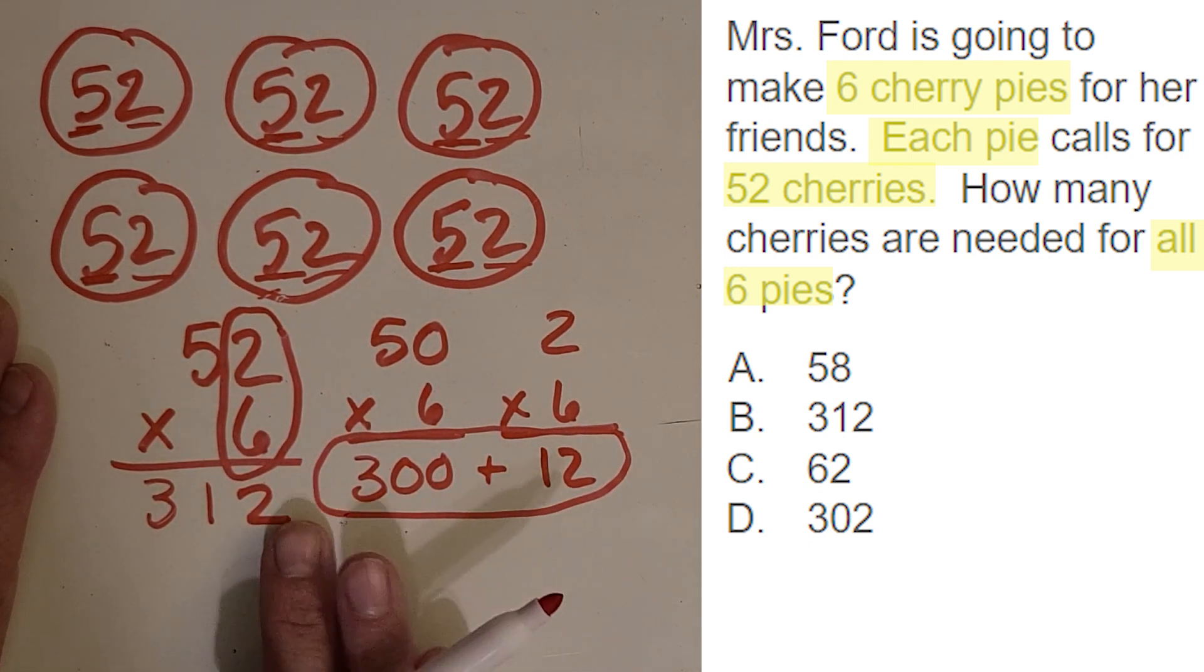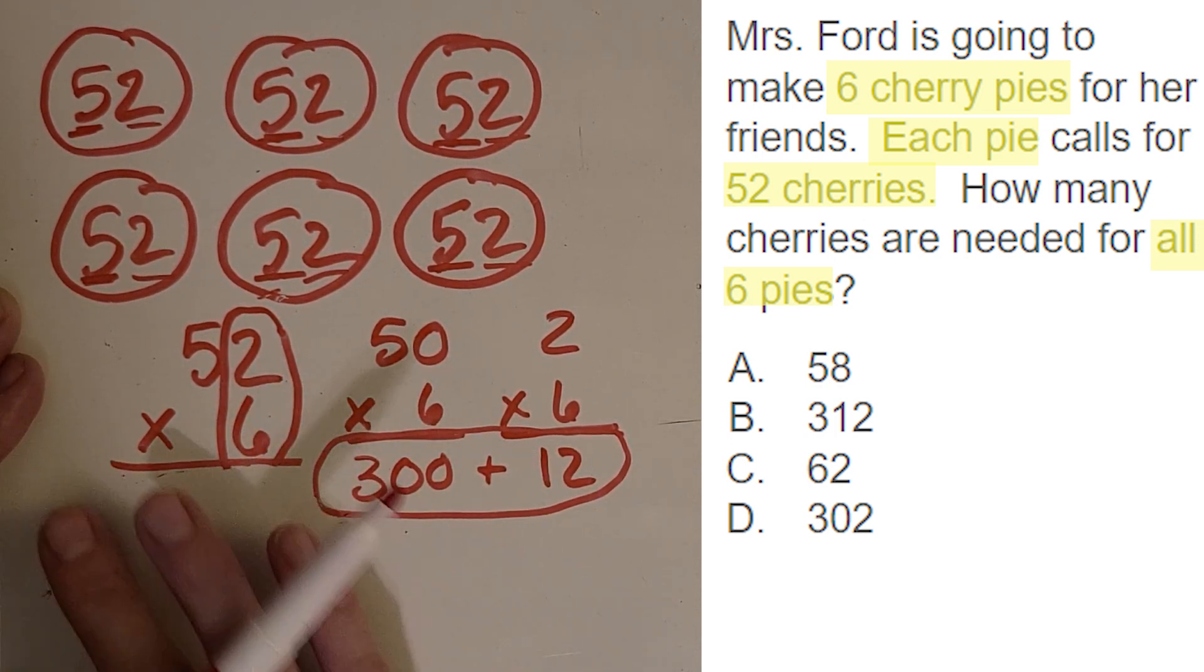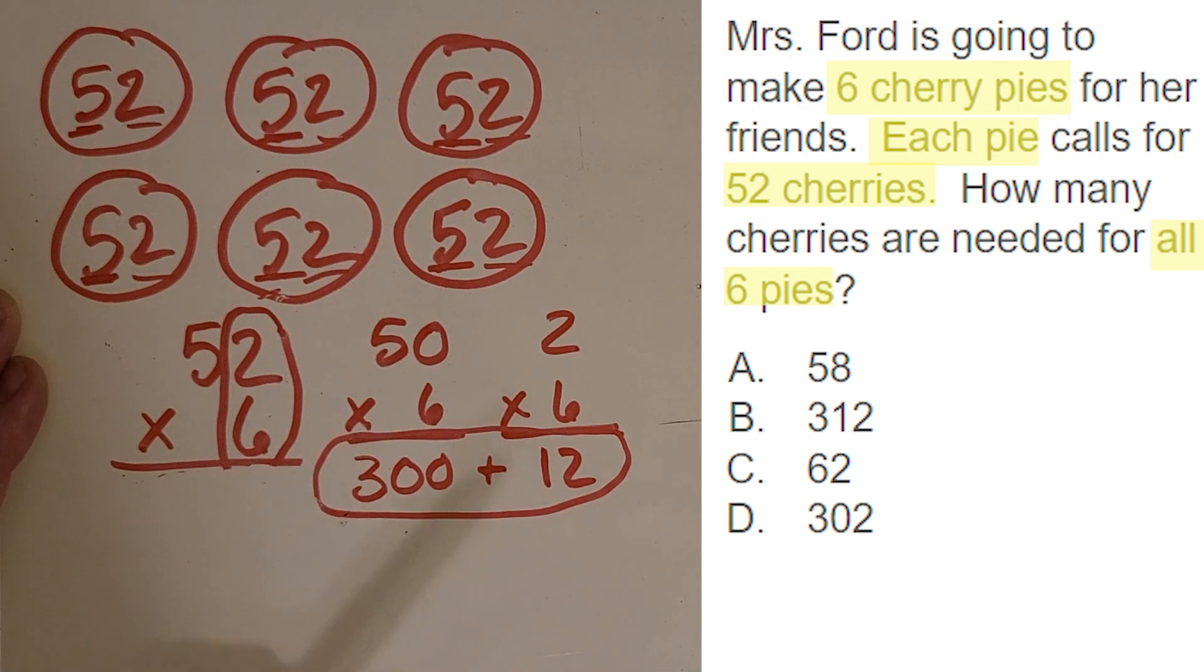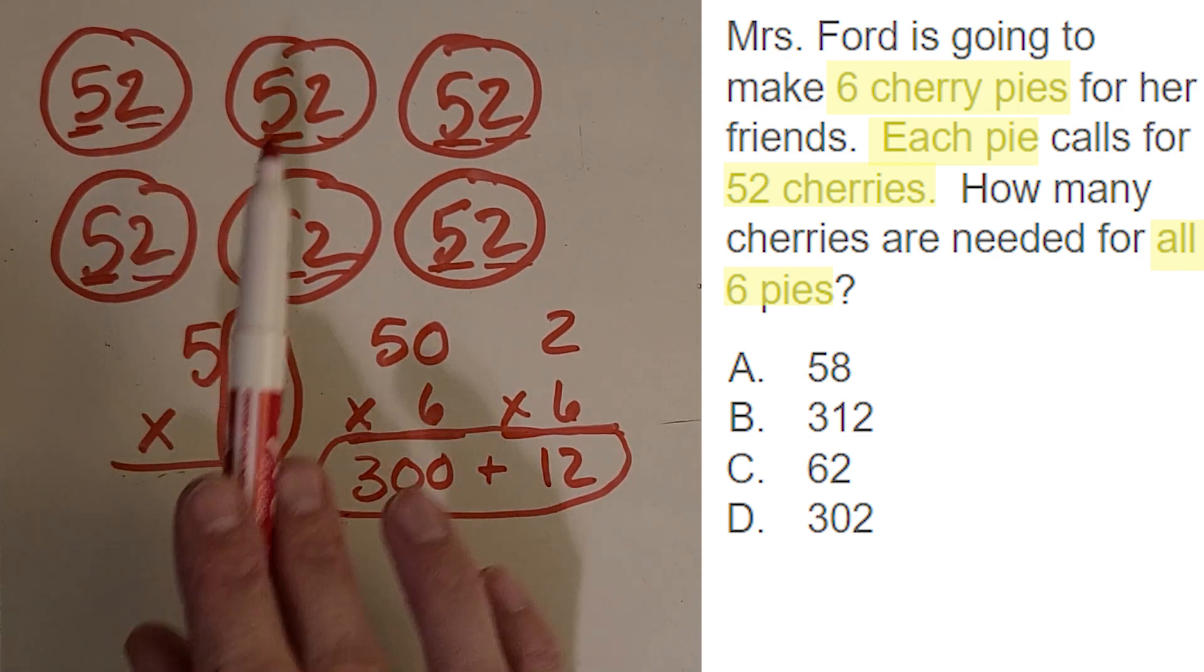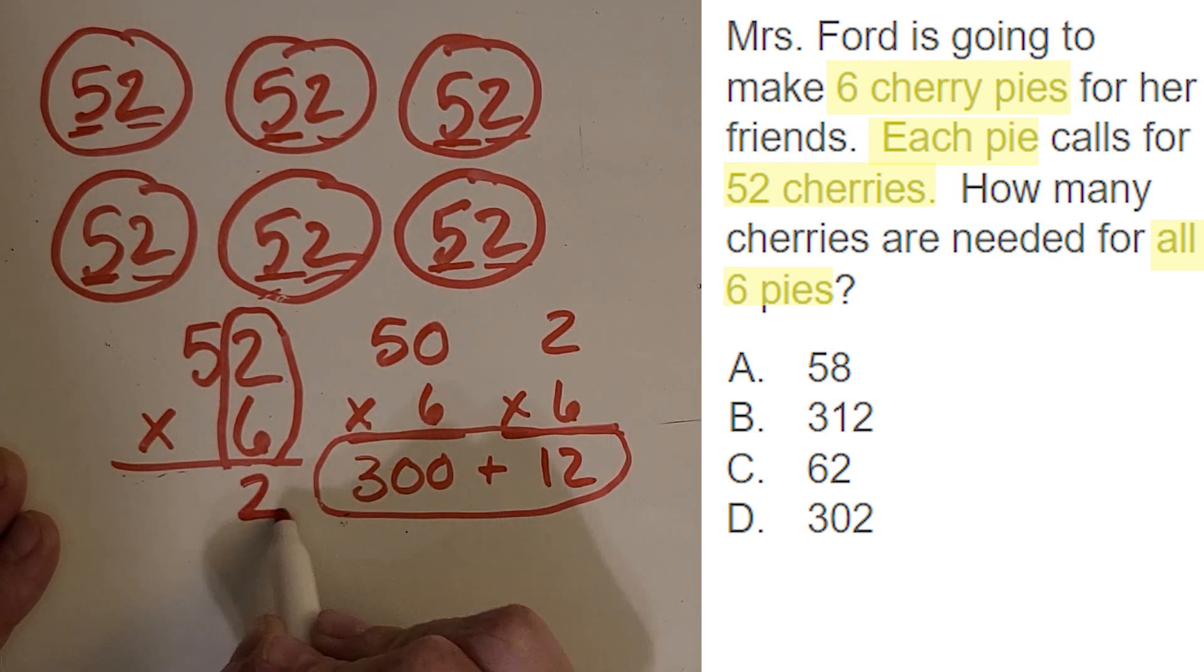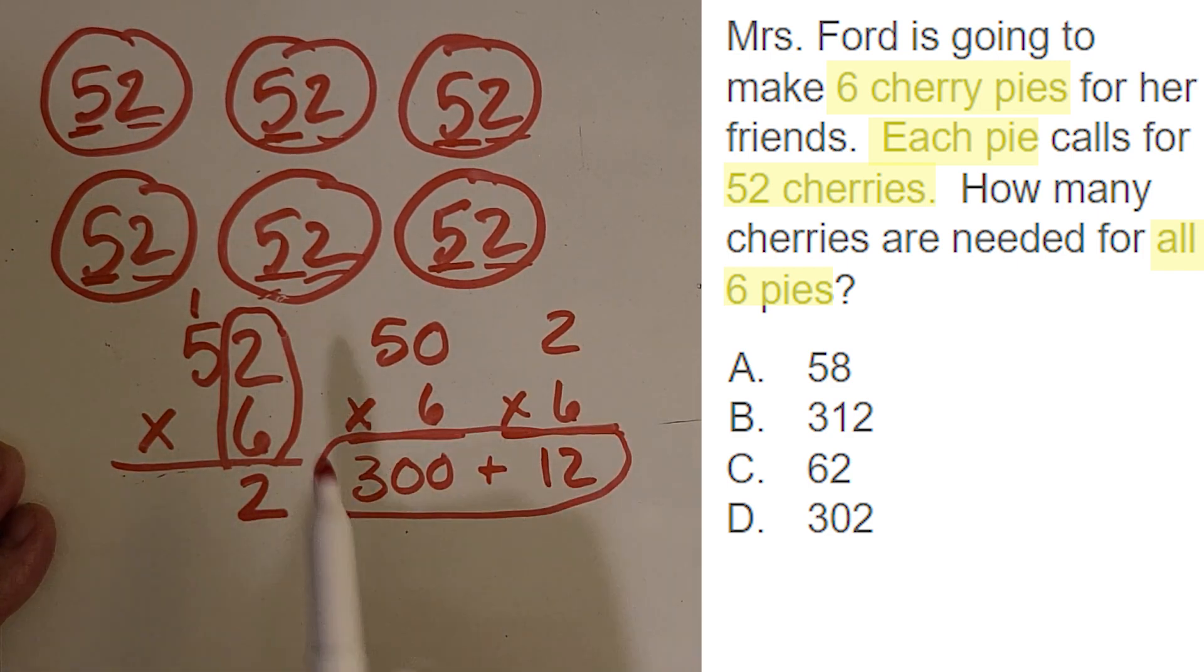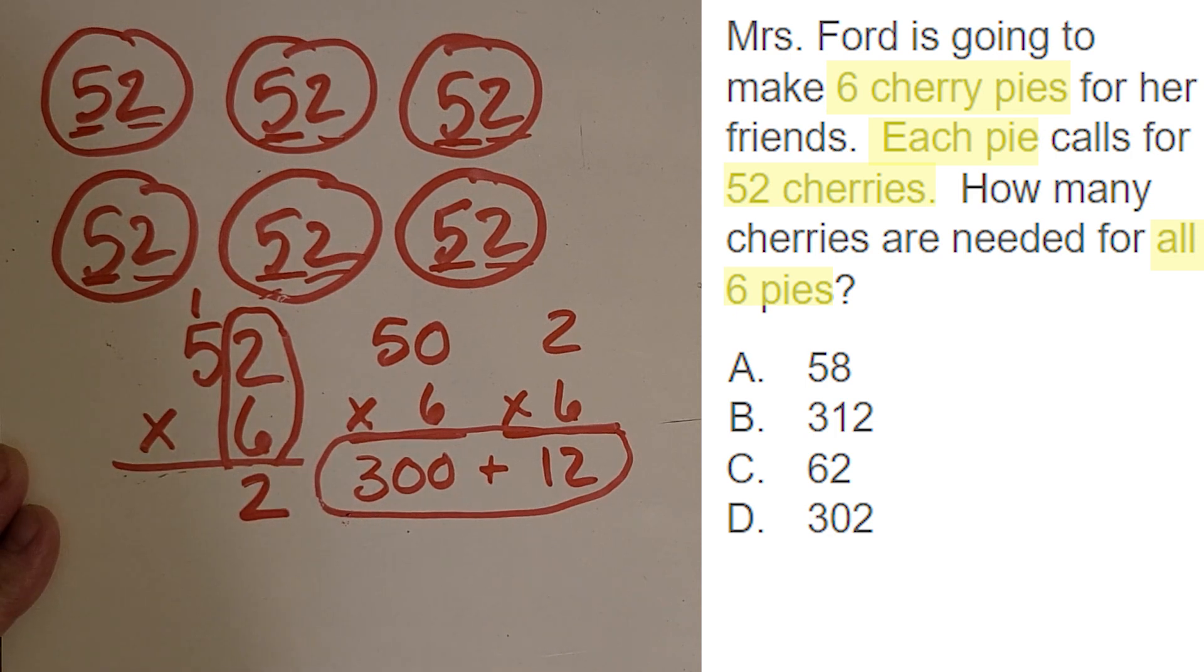Let me also show you, I'm going to erase this answer right here. Let me also show you with just something called the standard algorithm. Now it's totally fine to add these up or do this partial products, but also you may start liking this. It's a shortcut. So 2 times 6 was 12, right? So you actually regroup it like you do when you add. And so you put your 1 right there.